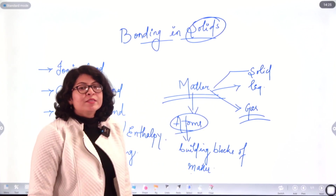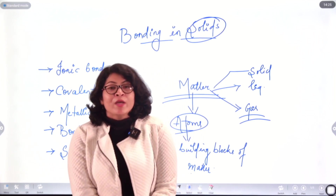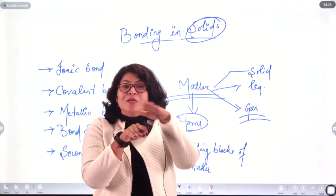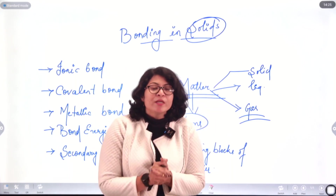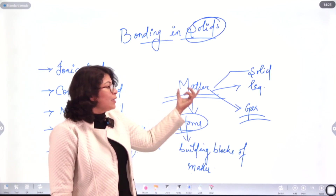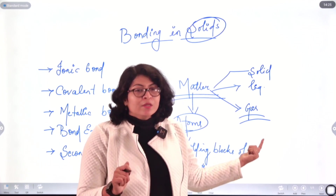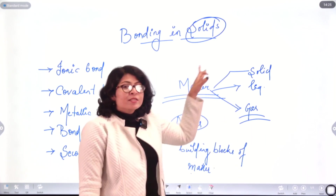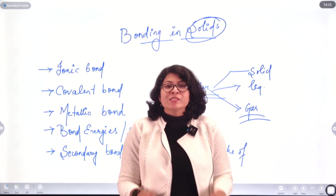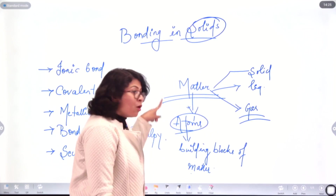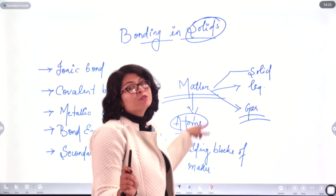Take the example of a building — a building is made when bricks are kept one upon the other, arranged in a particular pattern. Similarly, for making up matter, atoms have to be arranged in a particular fashion. Matter is classified as solid, liquid, and gas. From solids, what you know is it is very hard — that means the building blocks of that matter might be arranged in a definite pattern which gives rise to a solid.